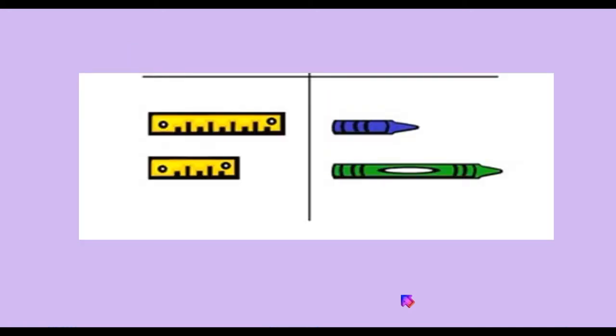So we have to use the correct word. Now check out this scale, which is the longest one, first one or second one? Yes, first one is the longest. And when we compare two things only, we can say this is longer than this.